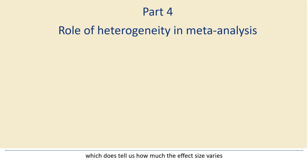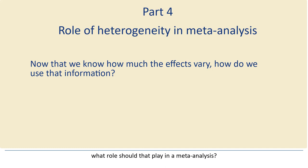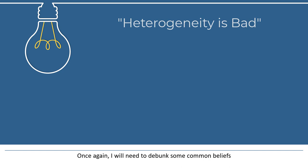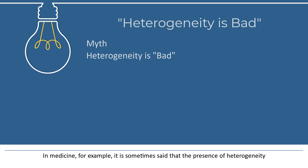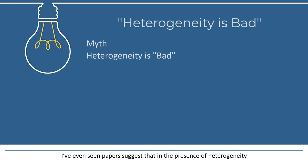Put simply, if we know how much the effect size varies, what role should that play in a meta-analysis? Point 1. I need to debunk some common beliefs. There's a common belief in some fields of research that heterogeneity is bad. In medicine, for example, it's sometimes said that the presence of heterogeneity reduces the quality of a meta-analysis. I've even seen papers suggest that in the presence of heterogeneity, a meta-analysis provides no useful information. The reality is much more complicated.